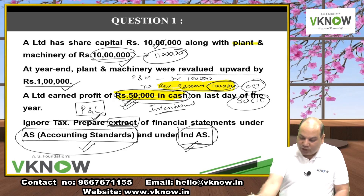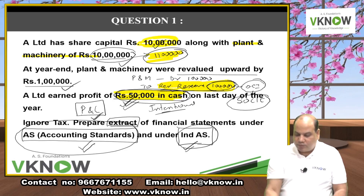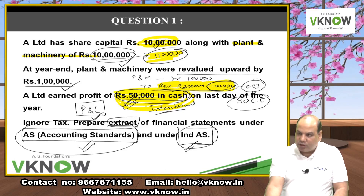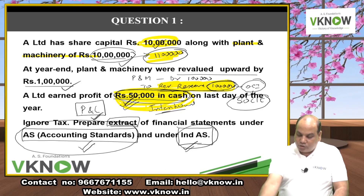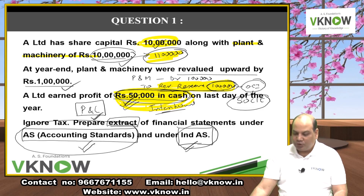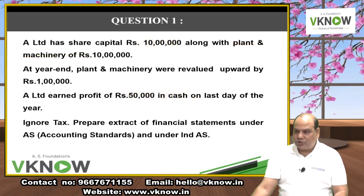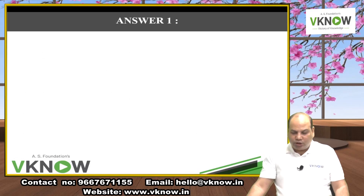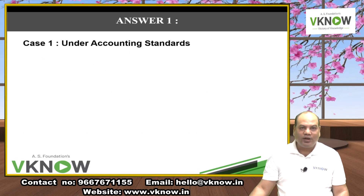We solve this twice: first under Accounting Standards, then under Ind AS. Under AS: ₹50,000 profit shown in P&L; ₹1 lakh revaluation reserve shown directly in Reserve and Surplus on Balance Sheet — no OCI concept in AS. Plant and Machinery shown at ₹11 lakh; Share Capital at ₹10 lakh. No SOCIE required under AS.